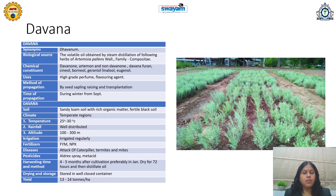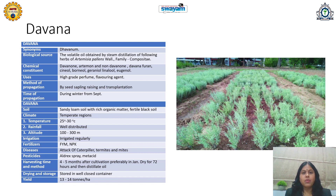Next is the Dauna plant, also called Davana. The volatile oil is obtained by steam distillation of the herb Artemisia pallens, belonging to family Compositae. Chemical constituents are davanone, artemone, nor-davanone, davanafuran, cineol, borneol, geraniol, eugenol. It is used as a high-grade perfume — very popular and commercially important — and also as a flavoring agent.